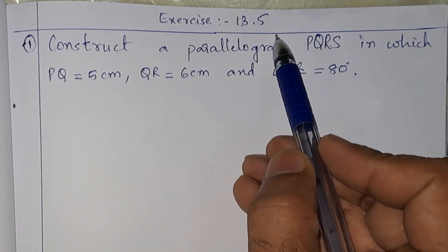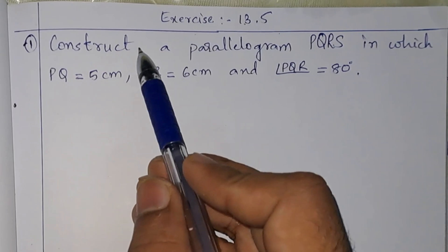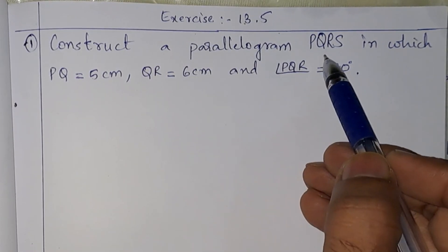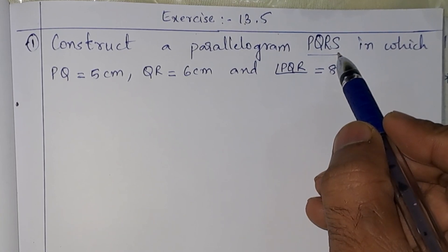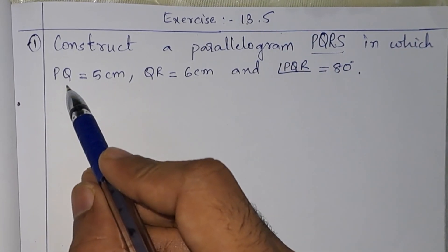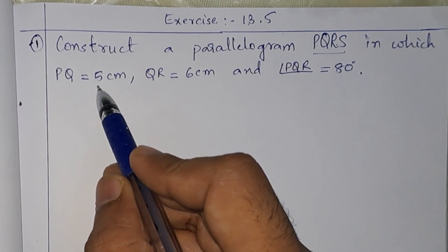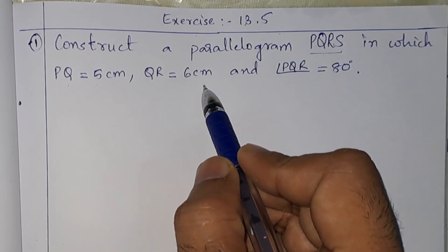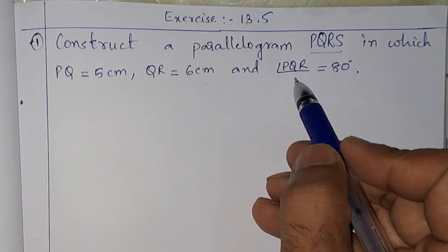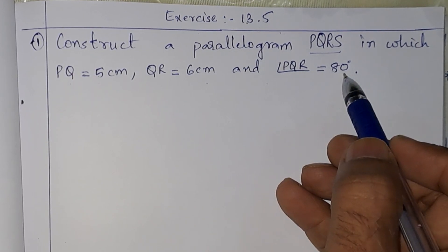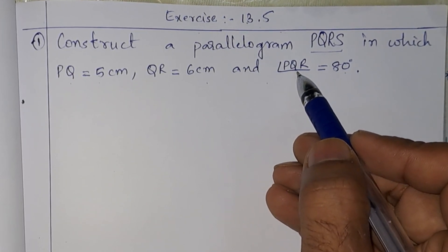Exercise number 13.5. First problem: construct a parallelogram PQRS. We need to construct a parallelogram PQRS in which PQ equals 5 centimeters, QR equals 6 centimeters, and angle PQR equals 80 degrees. That means angle Q is 80 degrees.